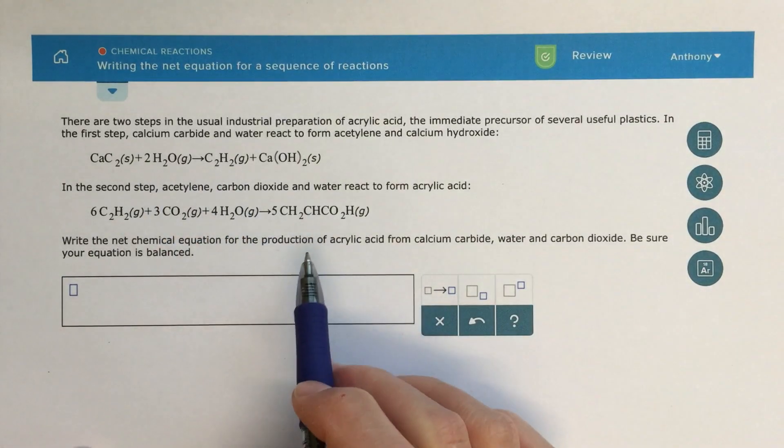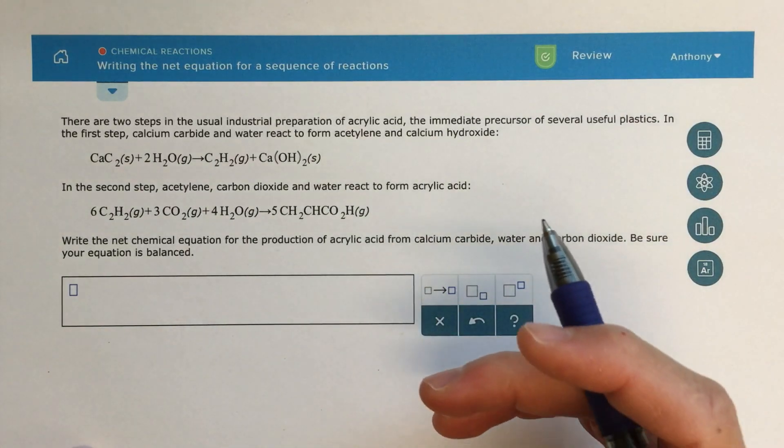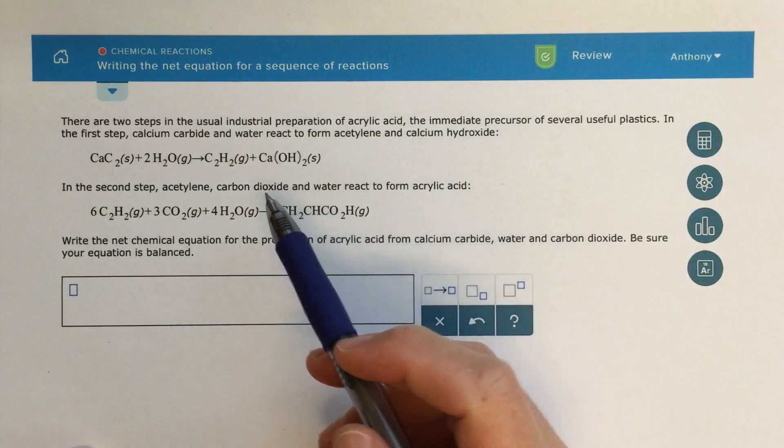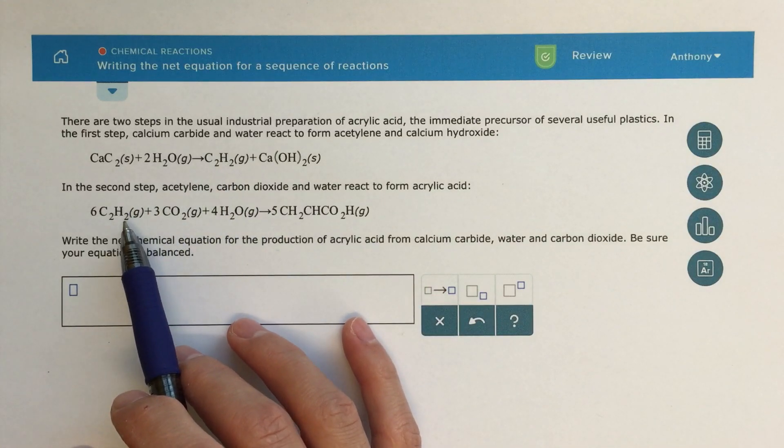So when I look at these two equations, and I want to add them together, the real key, the thing that you should be looking out for, is some species that shows up on the product side in one reaction, and the reactant side on the other reaction.